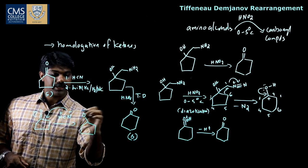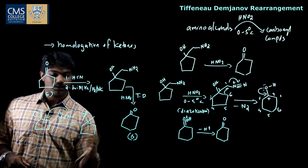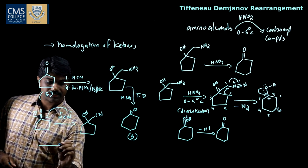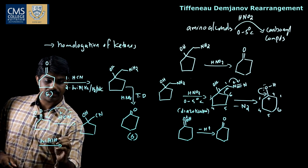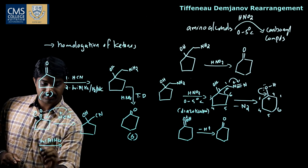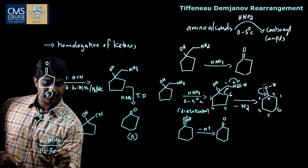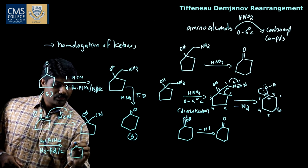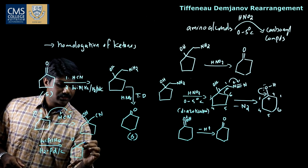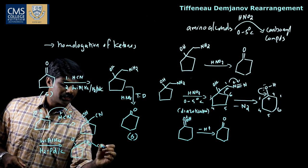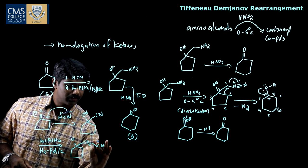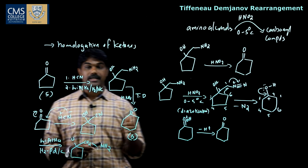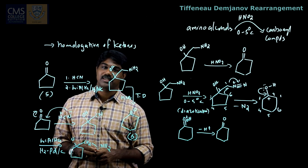We get an O− intermediate, and H gets bonded to the oxygen. We get a CN group. On reduction, using a stoichiometric amount of lithium aluminum hydride or catalytic hydrogen in the presence of palladium on carbon, we get the product with OH and CH2NH2 groups. This is about the Tiffeneau-Demjanov rearrangement reaction. Thank you.